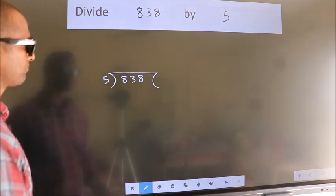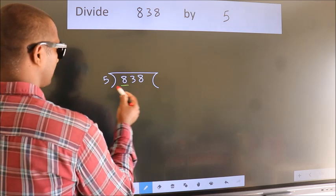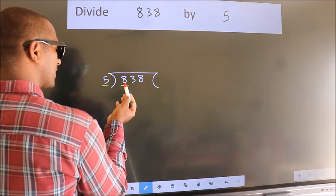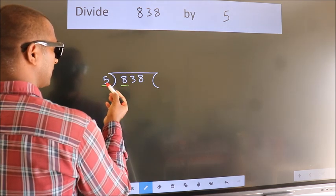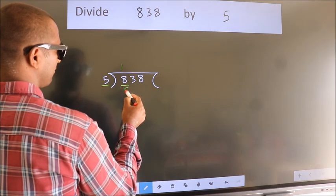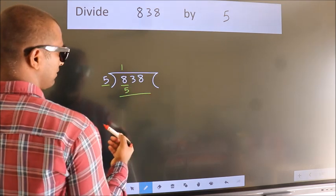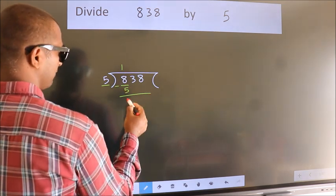Next, here we have 8, here 5. A number close to 8 in the 5 table is 5×1=5. Now we should subtract. We get 3.